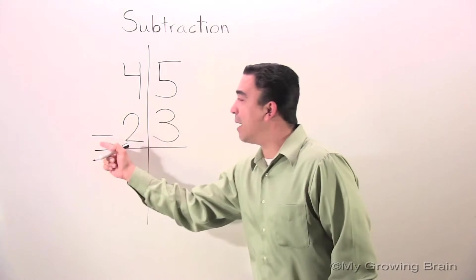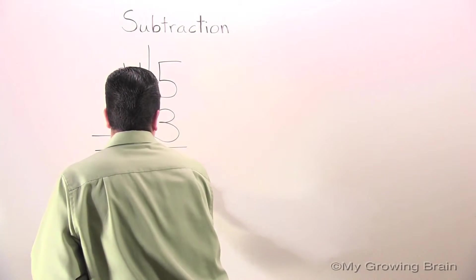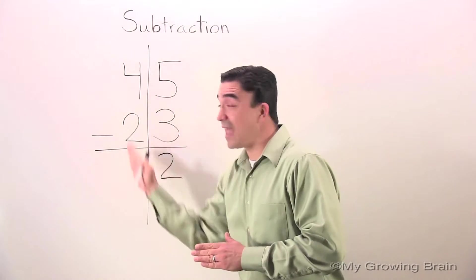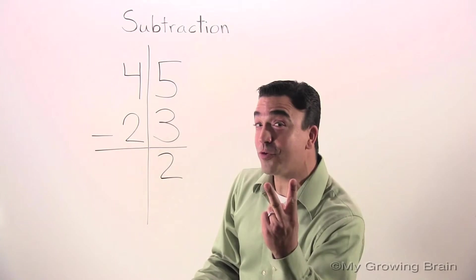5 minus 3 is 2. Now, we're going to move into the tens place. 4 minus 2 equals 2.